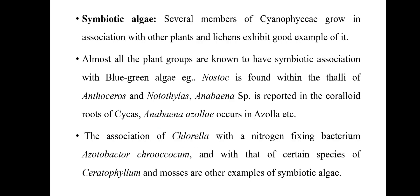Next, symbiotic algae — several members of Cyanophyceae grow in association with other plants. The most common example is Nostoc, found in the thallus of Anthoceros and Notothylas. Another example is Anabaena, which is found in the coralloid roots of Cycas. Anabaena azollae is found in association with Azolla. Chlorella forms another association with Azotobacter and with other species of Ceratophyllum and mosses.